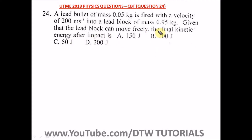So two things we have to look for here. First, we have to find the final velocity, and then after getting the final velocity, we can get our final kinetic energy after impact. Remember the formula to get kinetic energy is half mv squared. So we get v first — our final velocity.